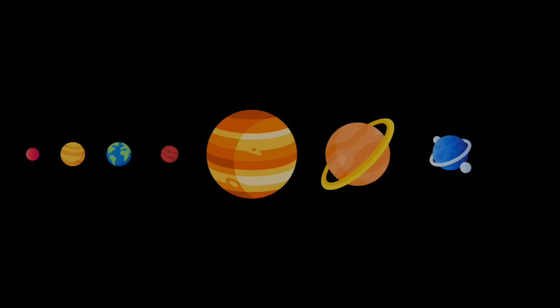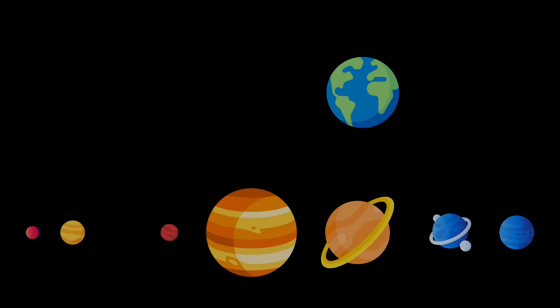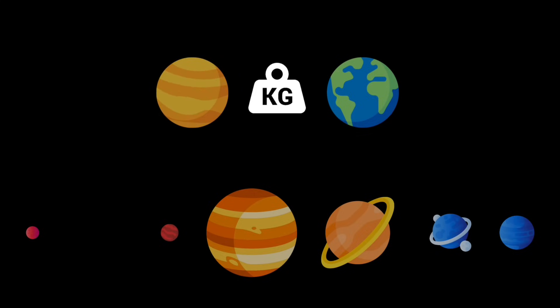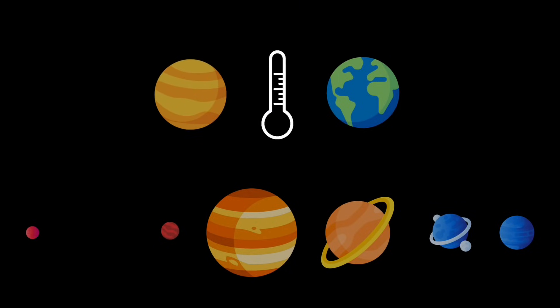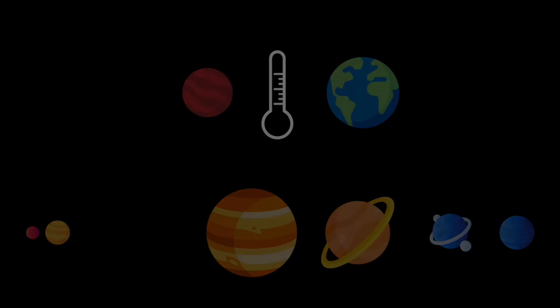To understand vector databases, I want you to first look above and think about all the planets in the solar system. What's the most similar planet? Well, it depends on how you're comparing them. If we're talking about mass, then Venus is the most similar to Earth. On the other hand, if we're talking about temperature, then Mars is the most similar one, and you can actually see it mathematically.